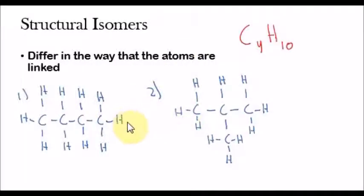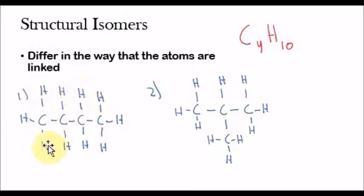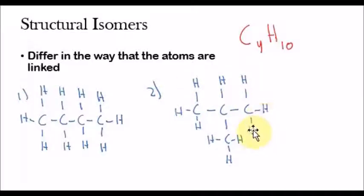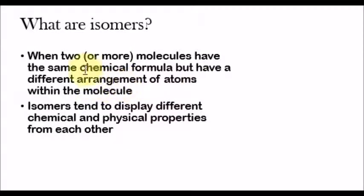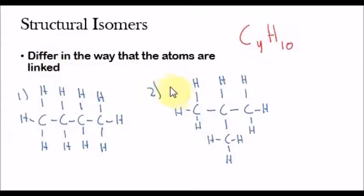The way that the atoms are arranged within the compound are different for both of these. This molecule right here has four carbons and ten hydrogen atoms — so C4H10. And then here again we have four carbon atoms and ten hydrogen atoms. So both of them have the same chemical formula, but they have a different arrangement of atoms.